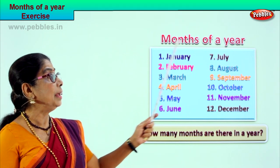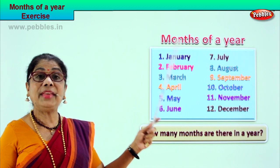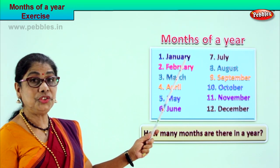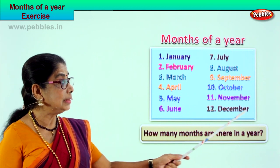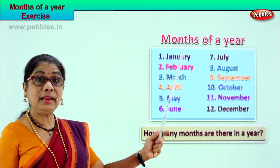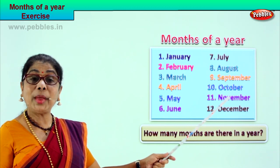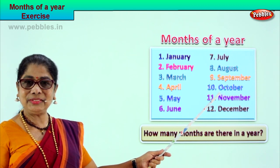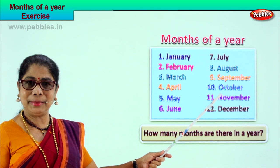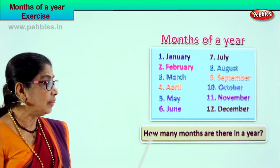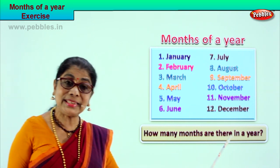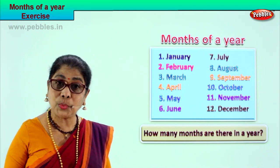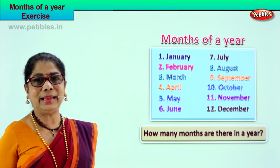Look carefully. Months of a year — there are 12 months in a year. The first one is January, the last one is December. There are 12 months. And which is the favorite month? Your birthday month! Now we have some questions. You must look at the question, read the question, and give me the answer.